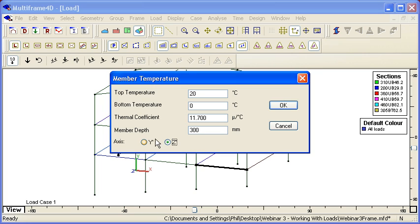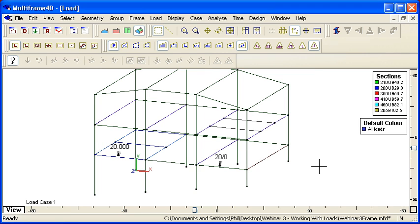So applying member loads that simulate thermal expansion or contraction effects is very straightforward. Just use the thermal load command from the load menu and choose a constant or a variable temperature gradient. Thank you for watching.